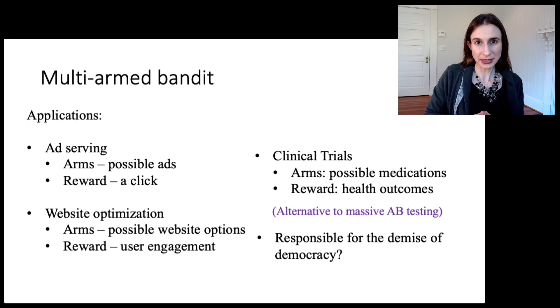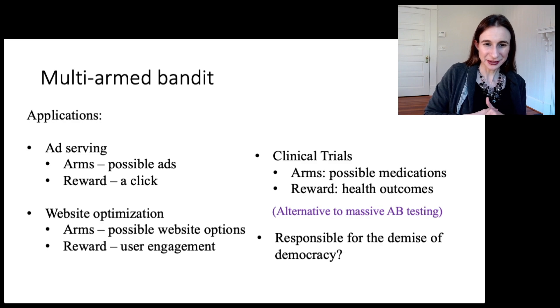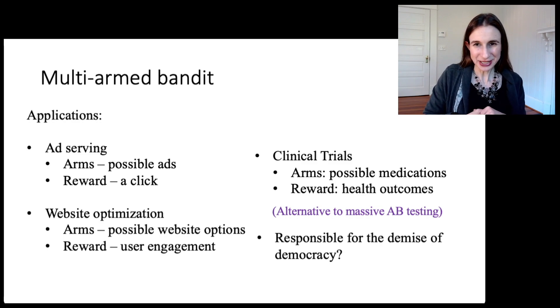You could claim that multi-armed bandits are part of the reason for the demise of democracy as we know it, because multi-armed bandits are controlling what people see on social media because they're trying to optimize for user engagement. So these algorithms, the ones I'll show you, they might seem simple, but they're actually very powerful and they can be very destructive when applied in the right way.